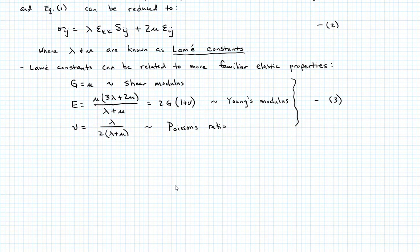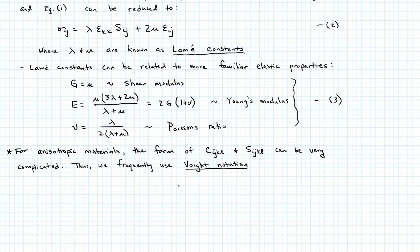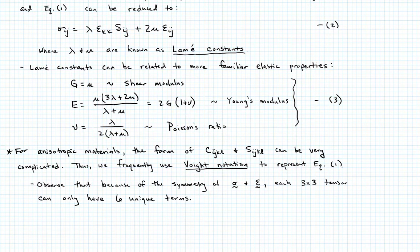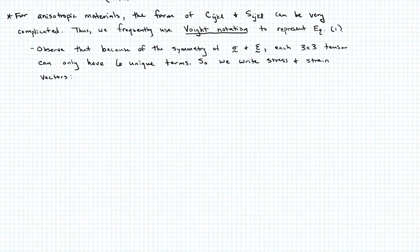So for anisotropic materials, the form of that compliance matrix or stiffness matrix in tensor notation can become very complicated. So in this case, what we do is we use what's referred to as Voigt notation to represent equation 1. So how do we do this? Well, the first thing we do is we observe that because of the symmetry in the stress and strain, each of these 3 by 3 tensors can only have 6 unique terms. So what we end up doing is writing, instead of writing tensors for stress and strain, we write stress and strain vectors.